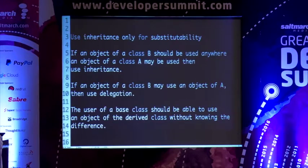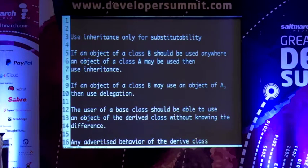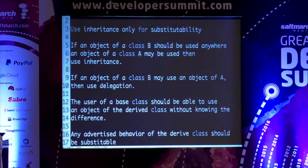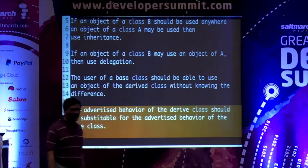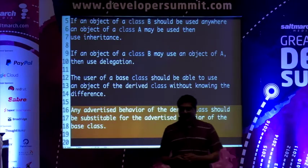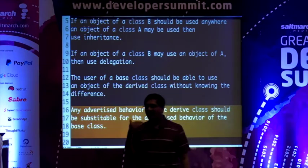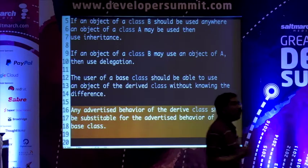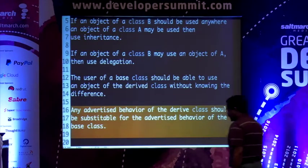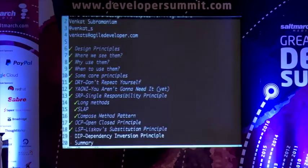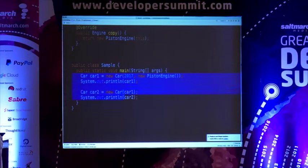LSP says: any advertised behavior of the derived class should be substitutable for the advertised behavior of the base class. This is a huge burden. If you're going to inherit from my class, you must be compatible — you have to follow a lot more. Let's look at an example. I have class A with methods F1 and F2. You're told to create class B that has F1, F2, and additionally F3.